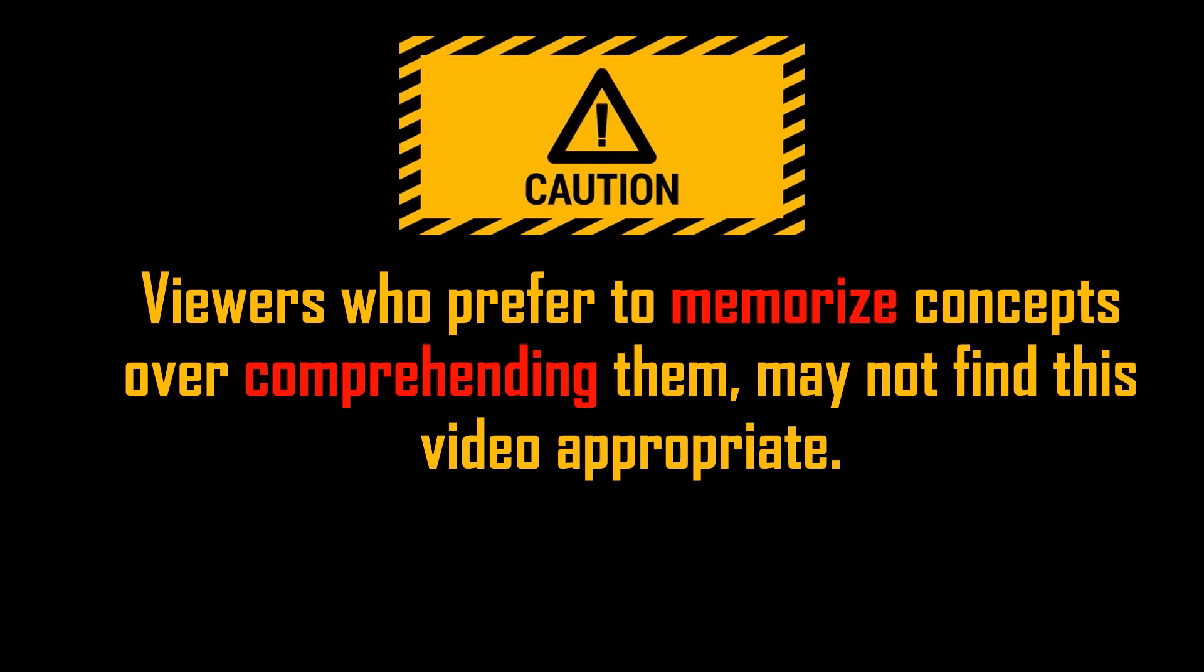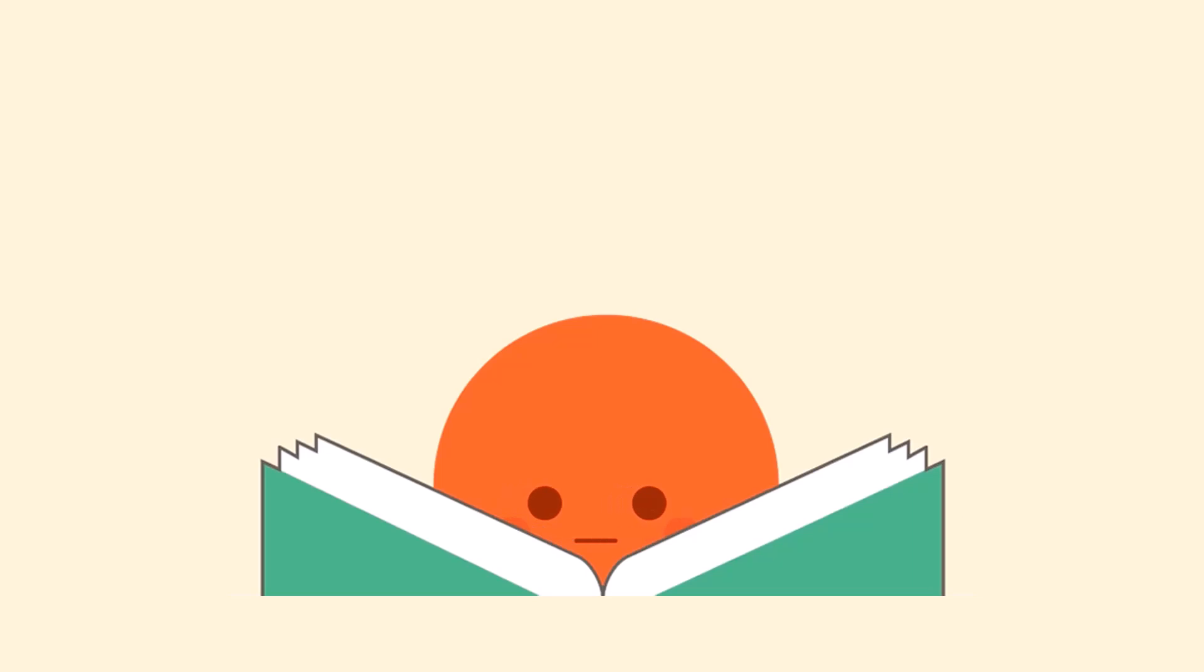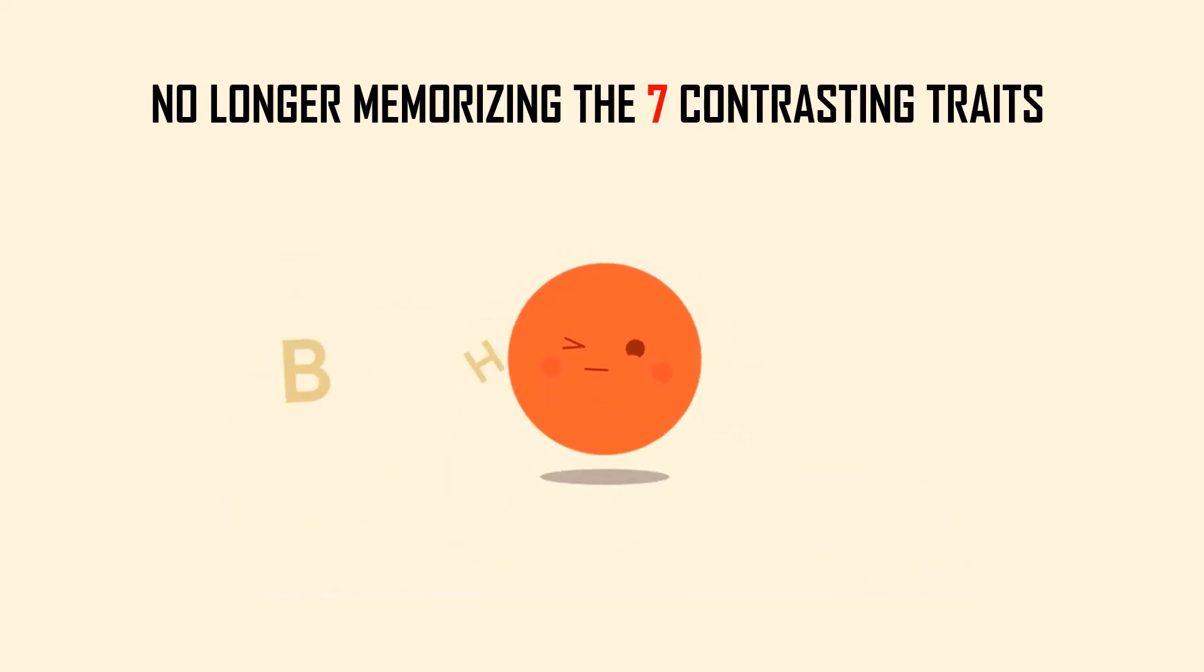Before going into the video, viewers who prefer to memorize concepts over comprehending them may not find this video appropriate. In this video, we will be understanding Mendel's contrasting traits. At the end of the video, we will understand why certain traits are dominant and why certain traits are recessive in the 7 contrasting traits of Mendel's experiment. At the end of the video, you will no longer be memorizing the 7 contrasting traits. So watch the video till the end.